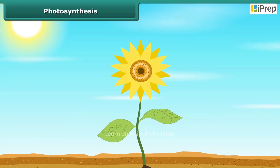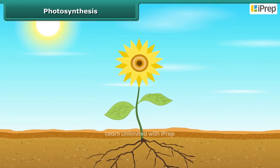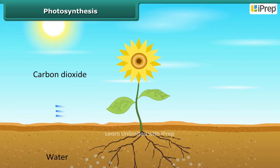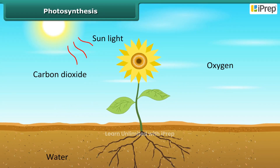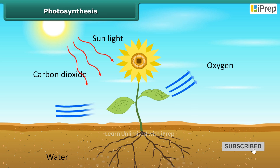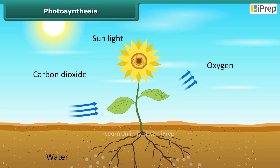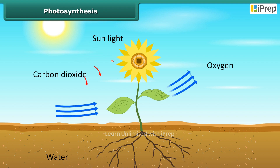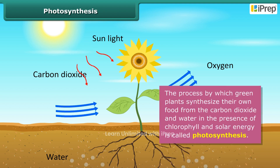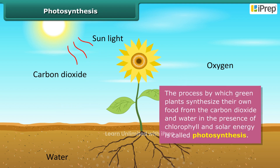As we know, green plants synthesize their own food. But do you also know how they synthesize their own food? Actually, green plants make their own food by the process of photosynthesis. Photosynthesis is a process by which